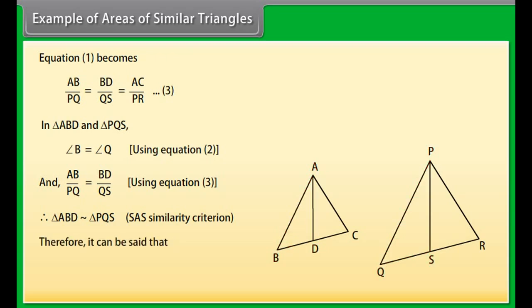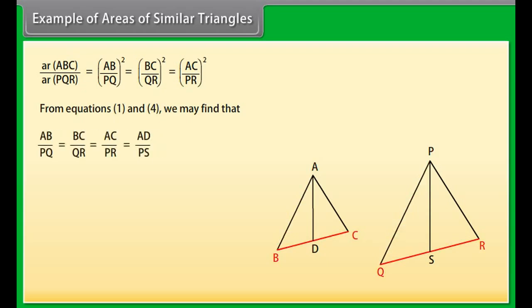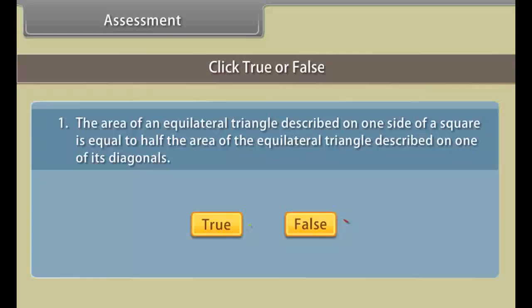Therefore AB upon PQ equals BD upon QS equals AD upon PS (equation 4). Area of triangle ABC upon area of triangle PQR equals AB upon PQ whole square equals BC upon QR whole square equals AC upon PR whole square. From equations 1 and 4: AB upon PQ equals BC upon QR equals AC upon PR equals AD upon PS. Hence, area of triangle ABC upon area of triangle PQR equals AD upon PS whole square.